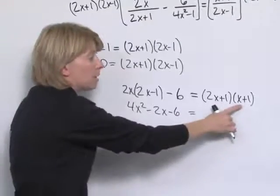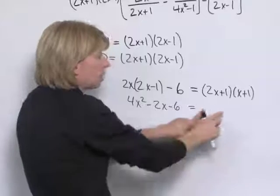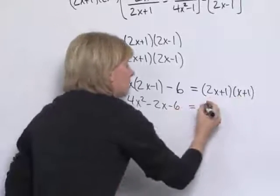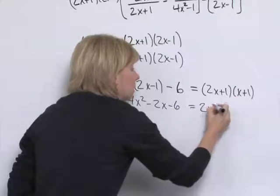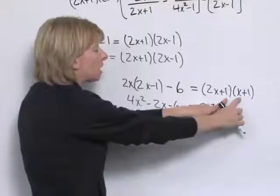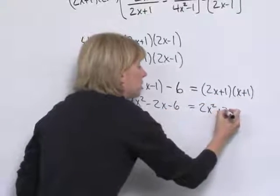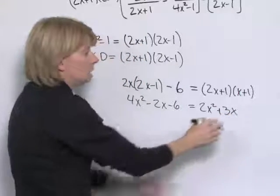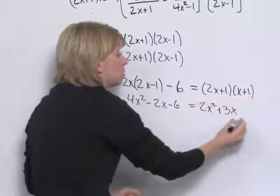And on the right we need to FOIL, and when we FOIL we'll get 2x squared. The middle term will have 2x plus 1x for 3x, and then plus 1 for our last product.